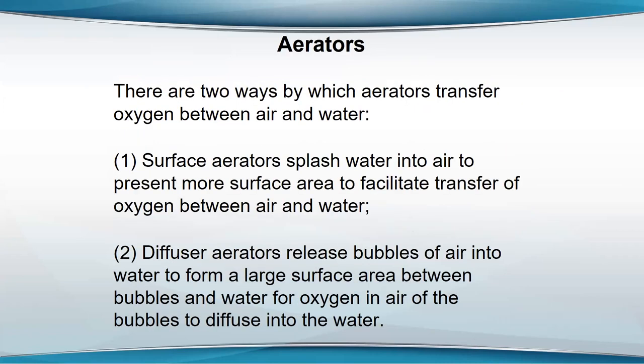There are really two ways in which aerators transfer oxygen to water. One, they splash water up into the air — spreading the water out so there's more surface for oxygen to enter. The other is they release bubbles into the water. When you splash water into the air, the aerator can't put any oxygen in the water directly — all they can do is splash water up into the air.